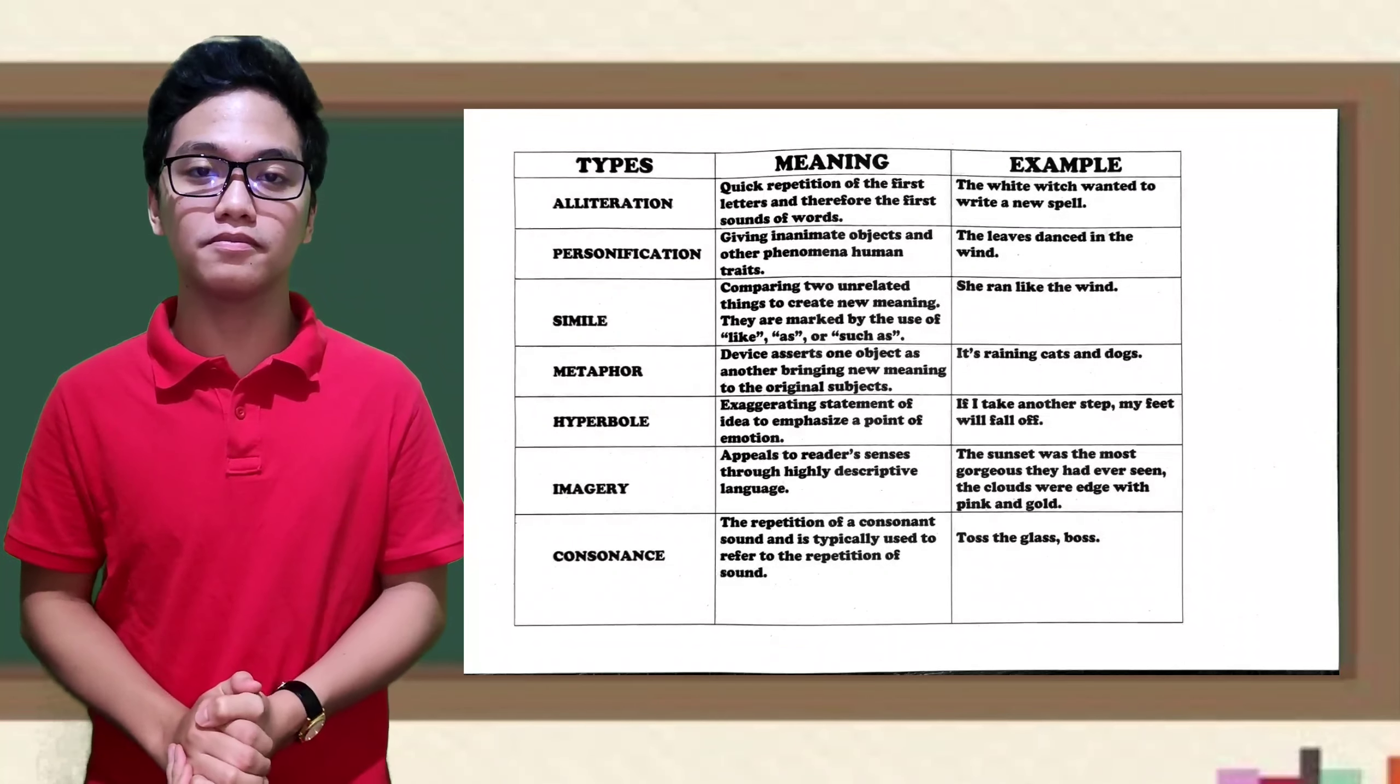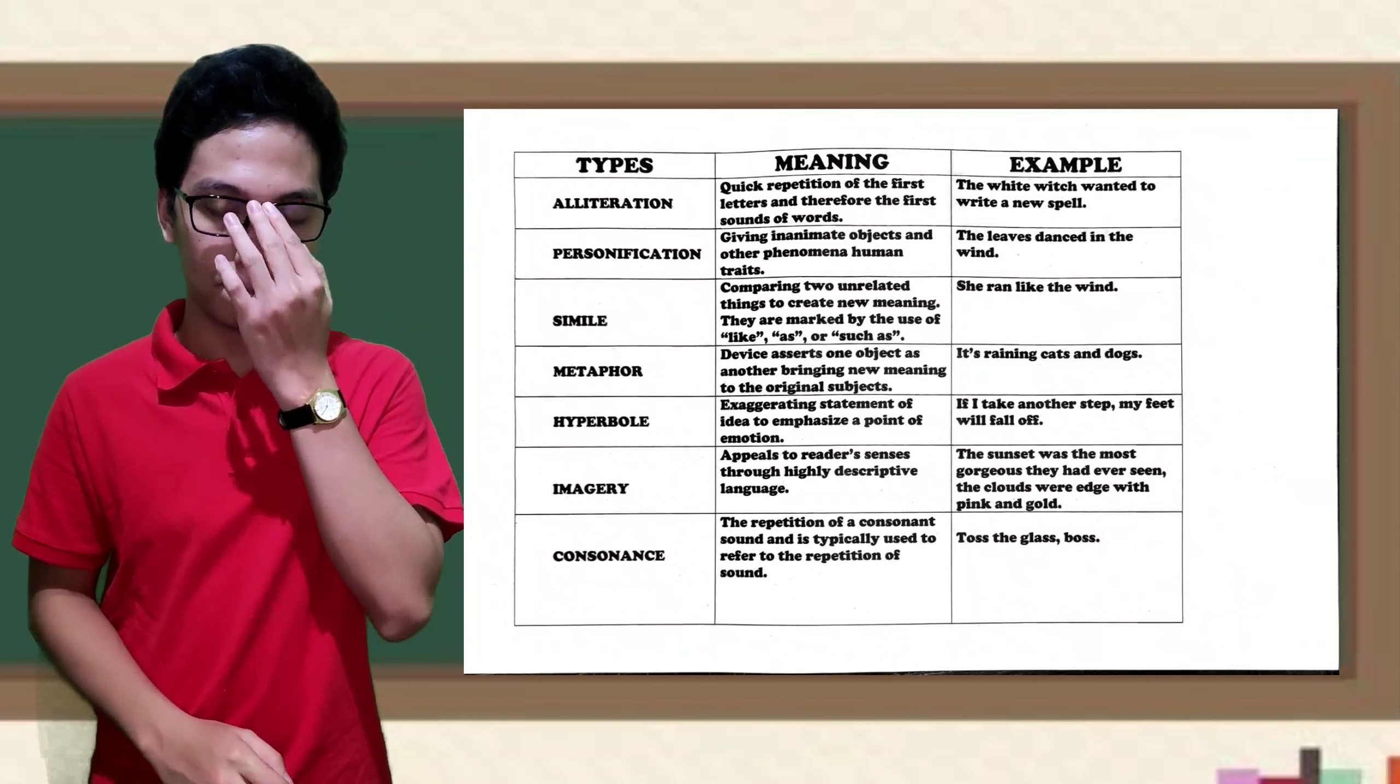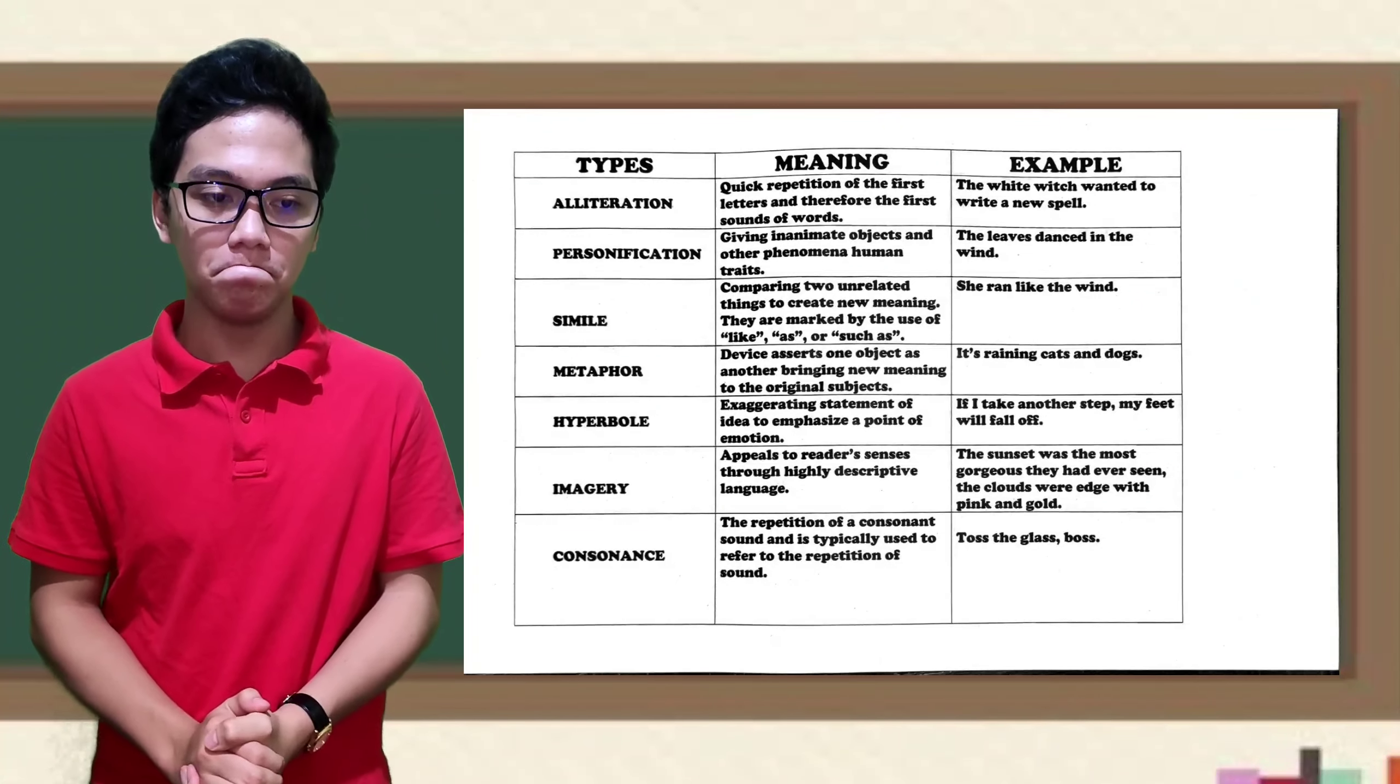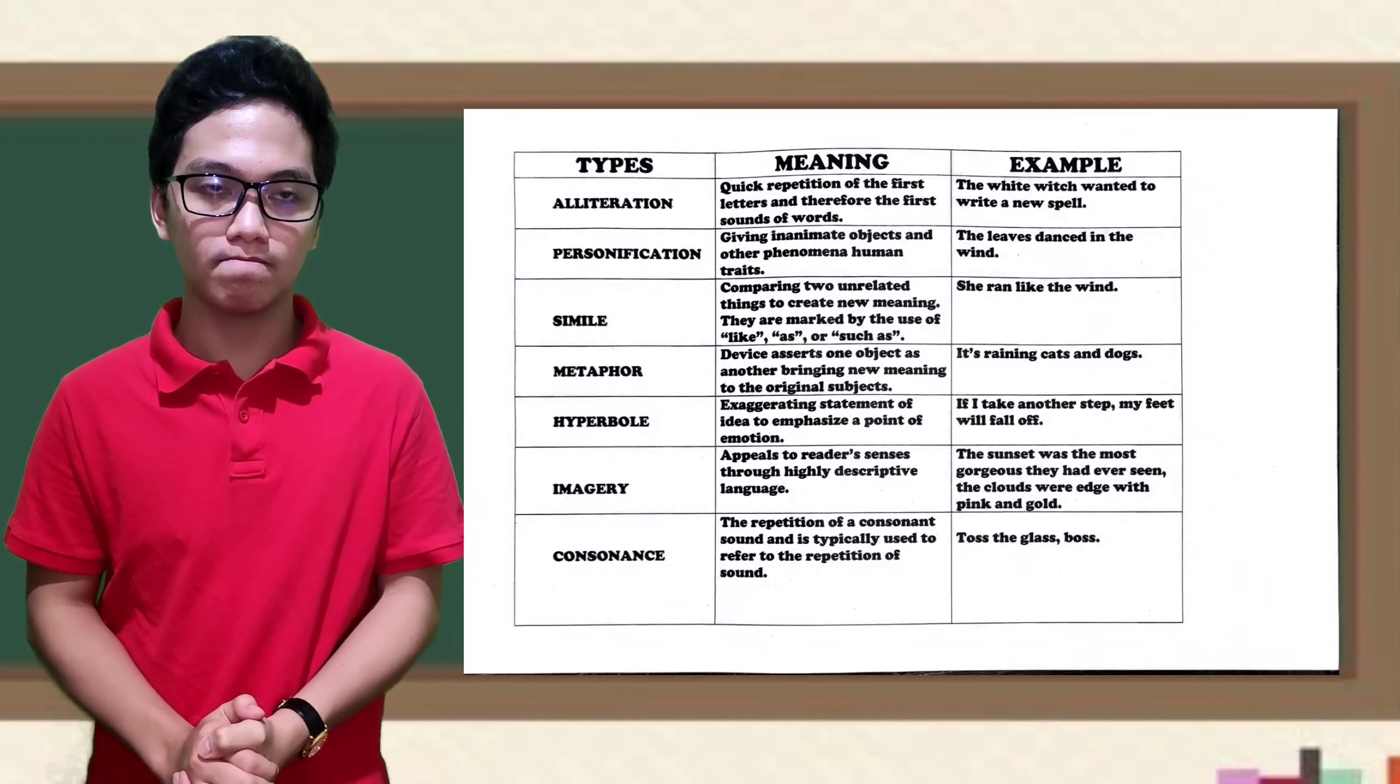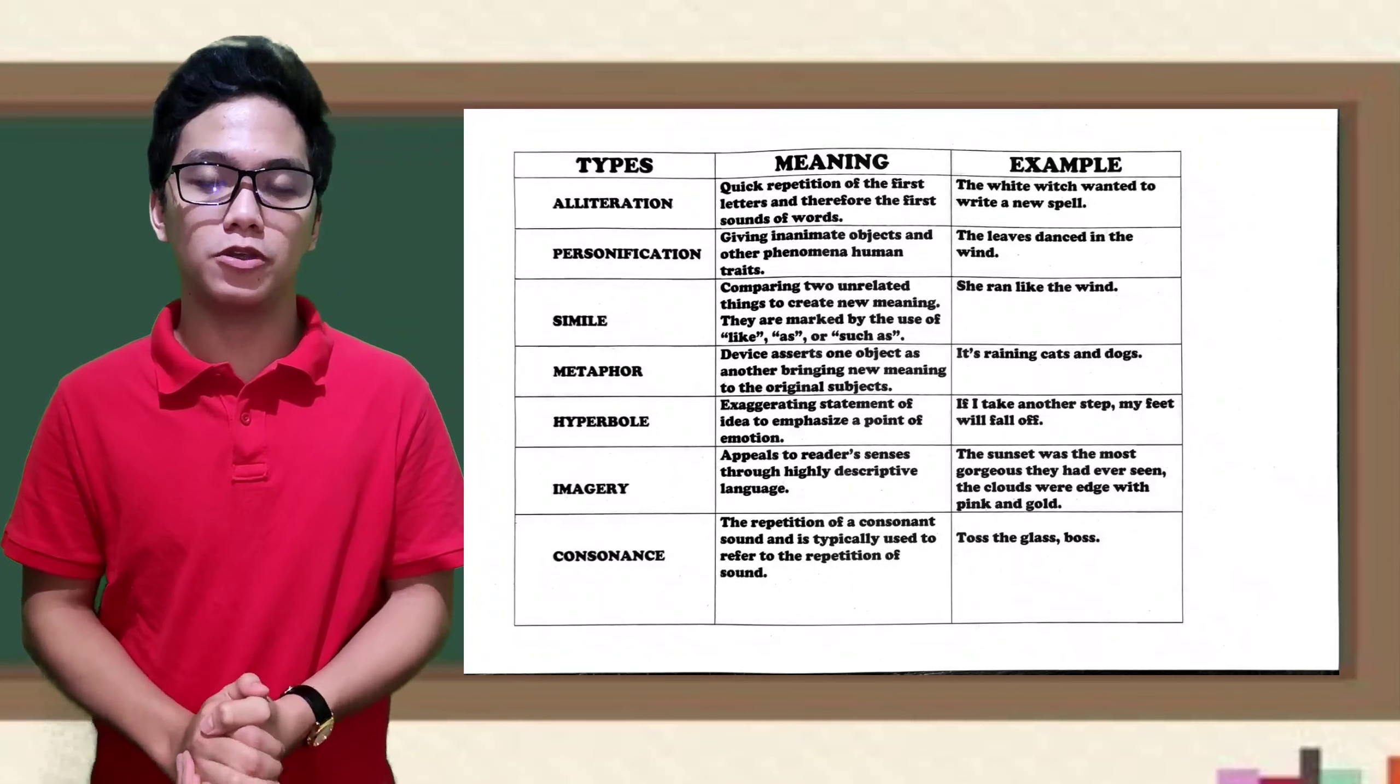Number four? Metaphor. Metaphor is a device that asserts one object as another bringing new meaning to the original subjects. Example, it's raining cats and dogs. Okay, good.